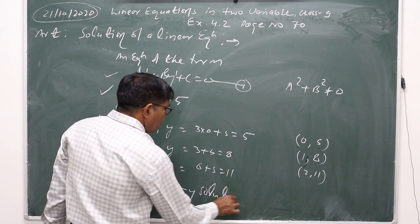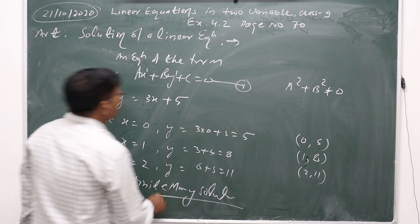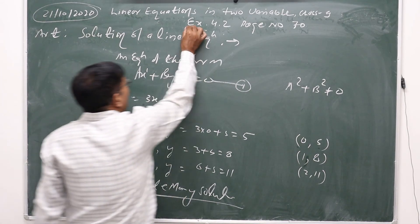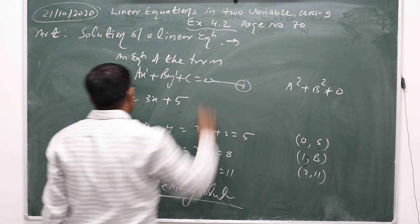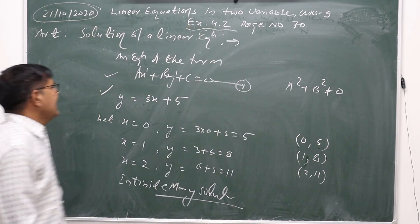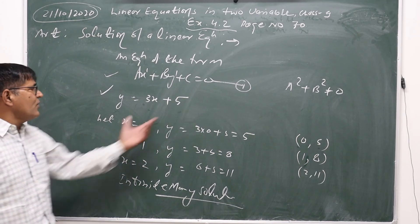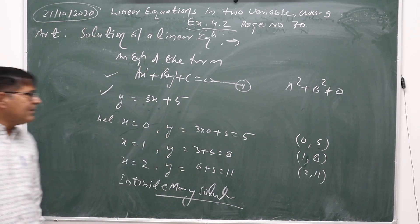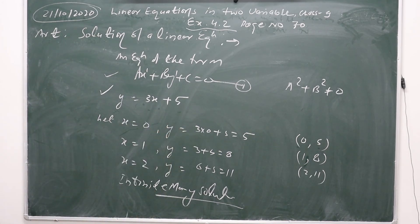Question number 1 from NCERT Exercise 4.2 is: if y equals 3x plus 5, then how many solutions does this equation have?